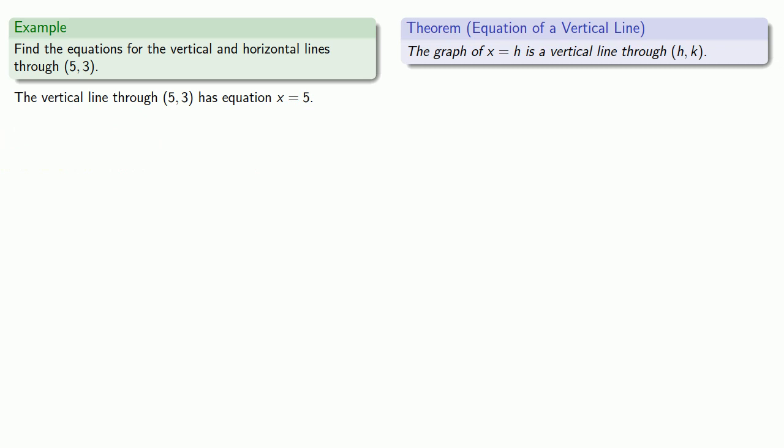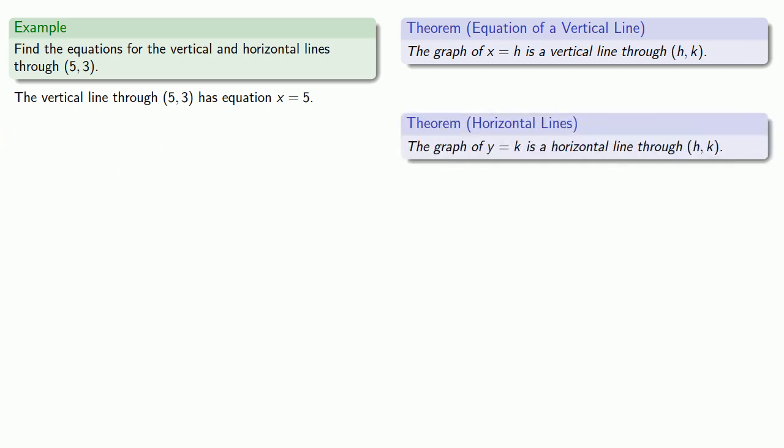Likewise, we know that the graph of y equals k is a horizontal line through the point. Comparing our result, we conclude that the horizontal line through has the equation y equals 3.